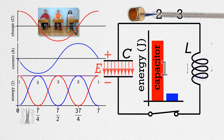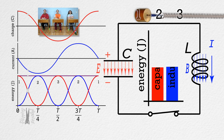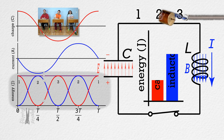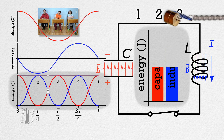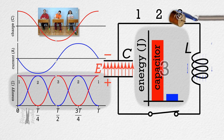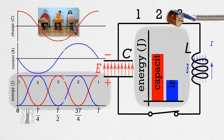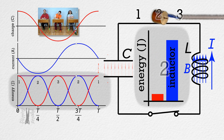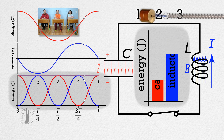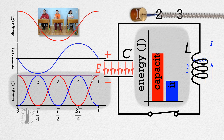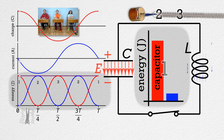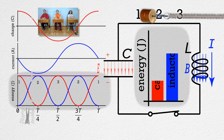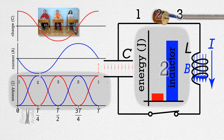And you can see the energy stored in the capacitor as well. There is both an energy curve with respect to time and an energy bar graph. Both of those show the energy in the capacitor in red to match the red charge curve, the red charges on the capacitor, and the red electric field in the capacitor. You can see how the energy in the capacitor changes as a function of time in all of those.